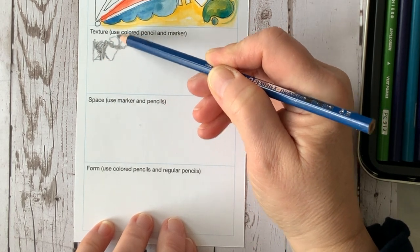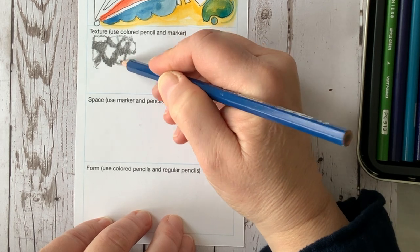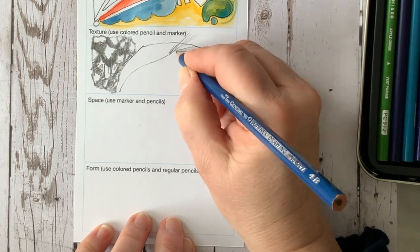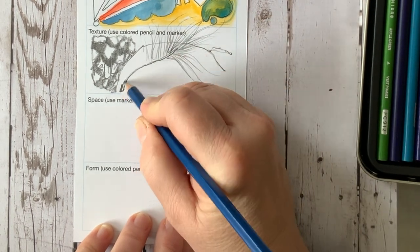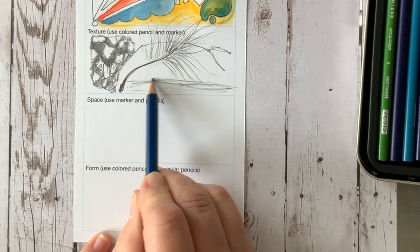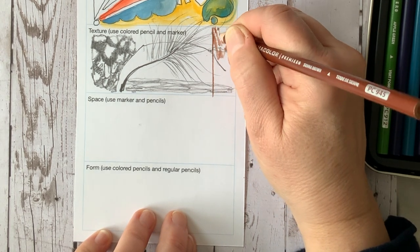Next is texture. Texture is kind of a funny thing because you have to develop a desire for what you're trying to do. You can make a bark texture. You can make a feather texture. You can make something look very soft, something very hard, and it's all about the application of your pencil work.